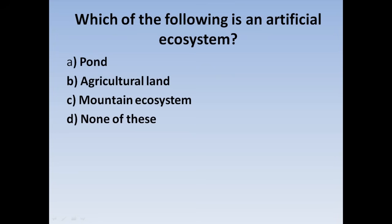Next question: Which of the following is an artificial ecosystem? Option A: Pond, Option B: Agricultural Land, Option C: Mountain ecosystem, Option D: None of this. Agricultural land is an artificial ecosystem. Correct answer: Option B.